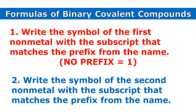Writing the formulas of binary covalent compounds is actually very simple. You just write the symbol of the first non-metal with the subscript that matches the prefix from the name. And remember, if there's no prefix on the first non-metal, then it just means it's one. And then you write the symbol of the second non-metal with the subscript that matches the prefix from that name. The name tells you what the number should be in the subscripts.